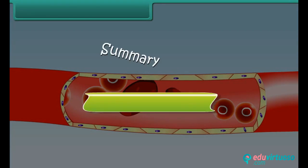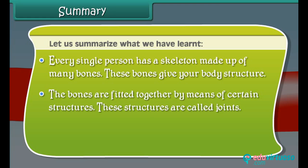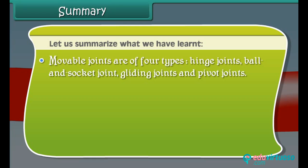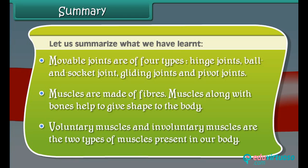Summary: Every single person has a skeleton made up of many bones that give our body structure. The bones are fitted together by structures called joints. There are two types of joints: movable and immovable. Movable joints are of four types: hinge joints, ball and socket joints, gliding joints, and pivot joints. Muscles are made of fibers and, along with bones, help give shape to the body. Voluntary muscles and involuntary muscles are the two types of muscles present in our body.